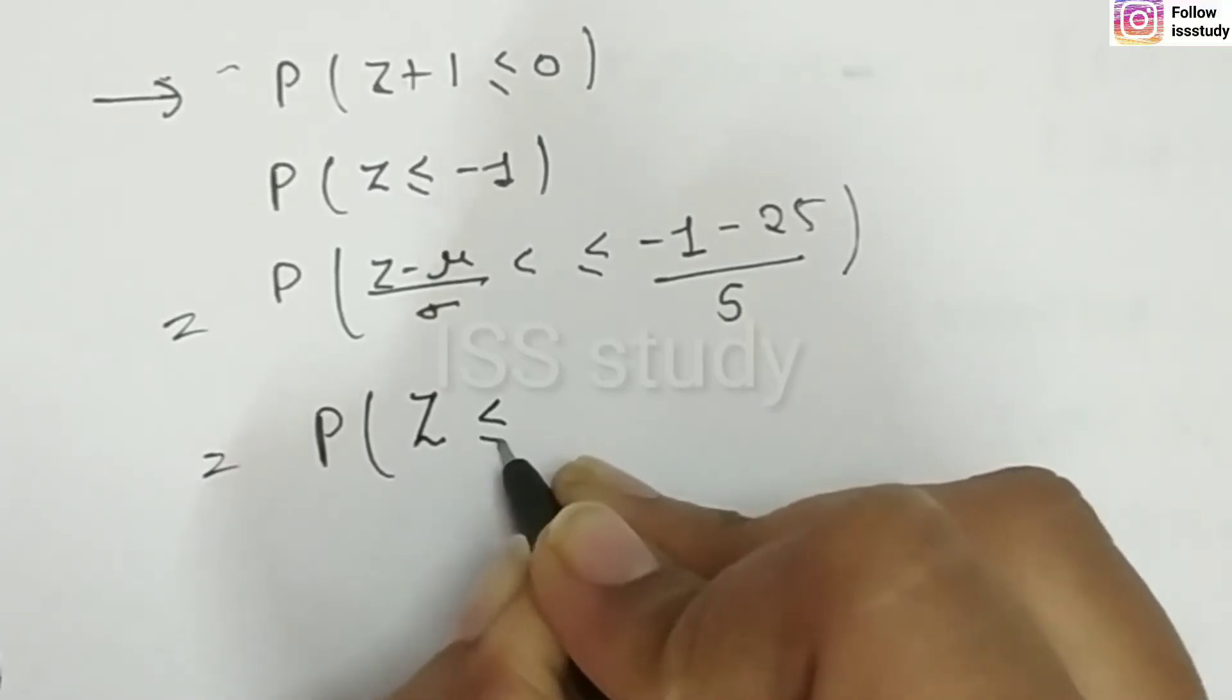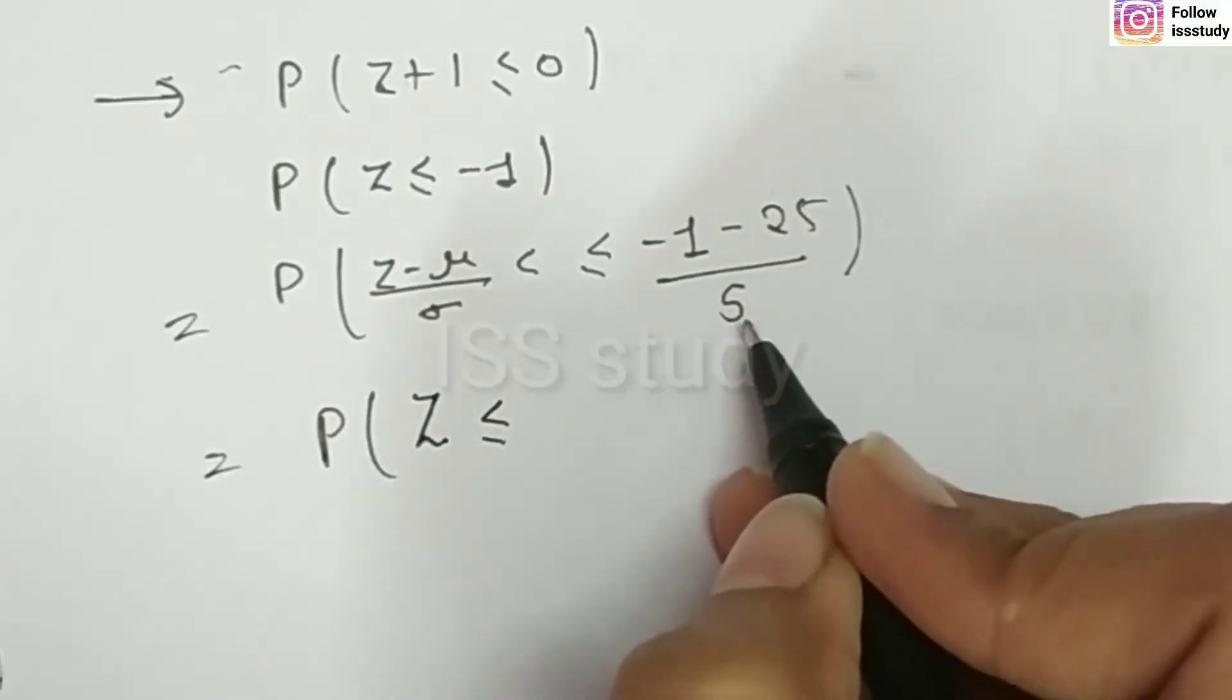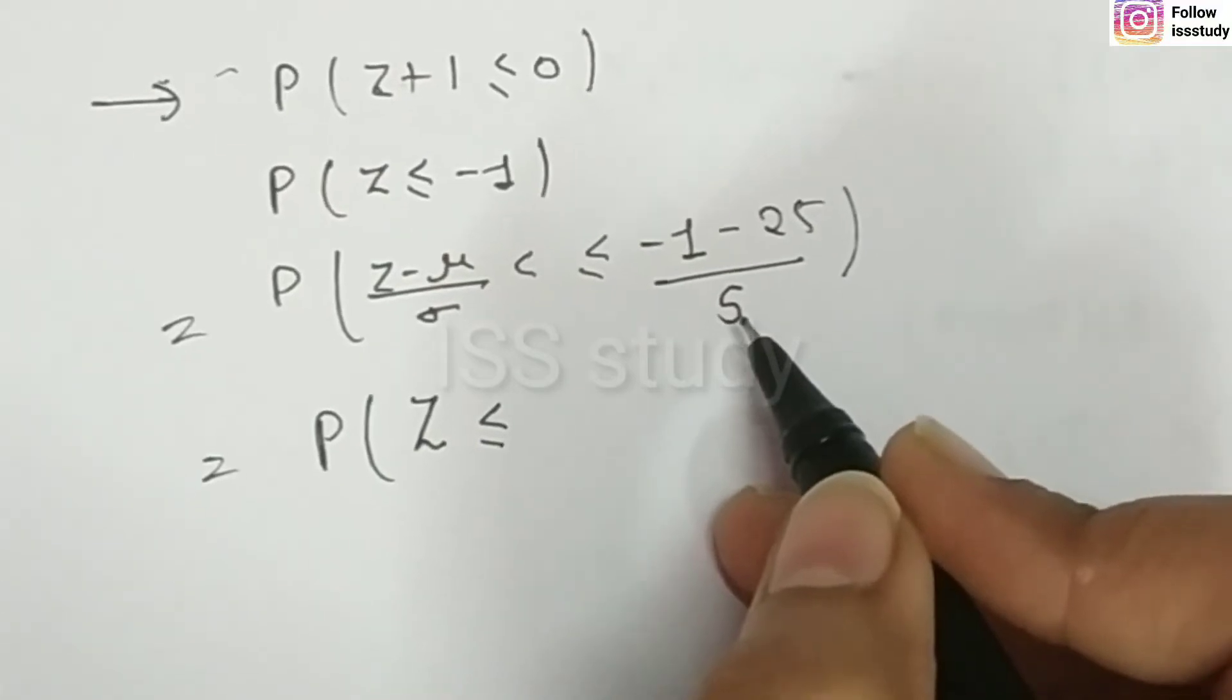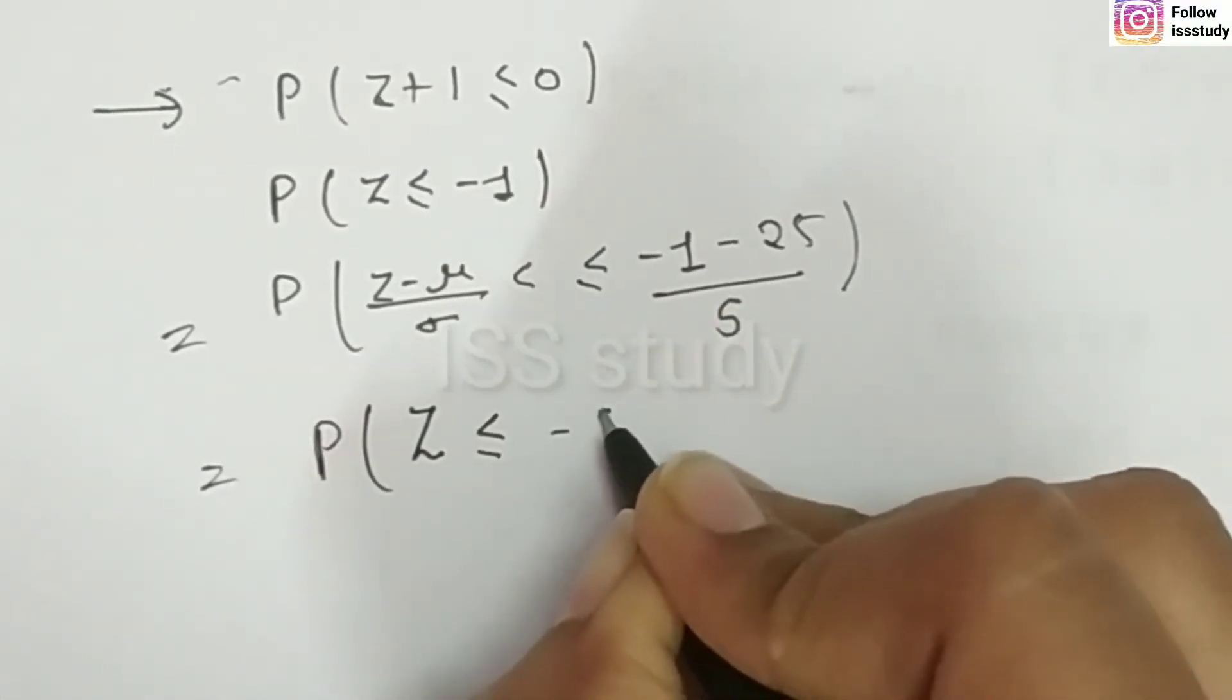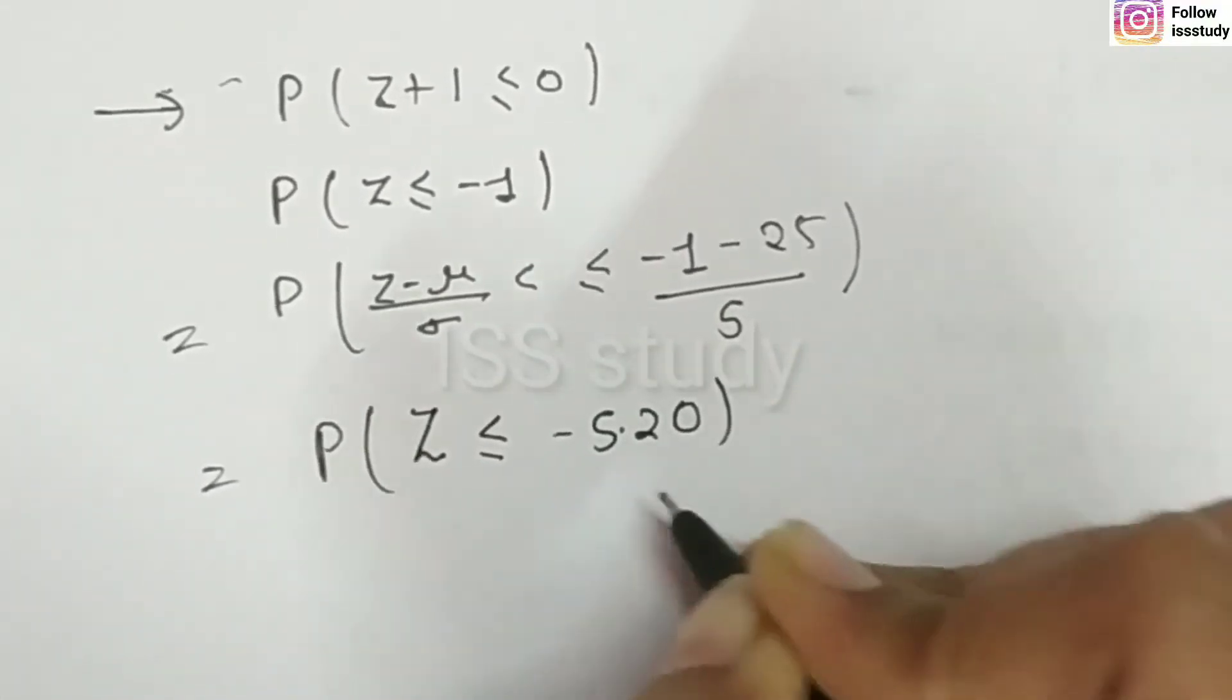So, this is minus 26 by 5. So, you can solve this. So, you can solve this. Here, you can see minus 5.20. Now, you can see here, if you are confused.